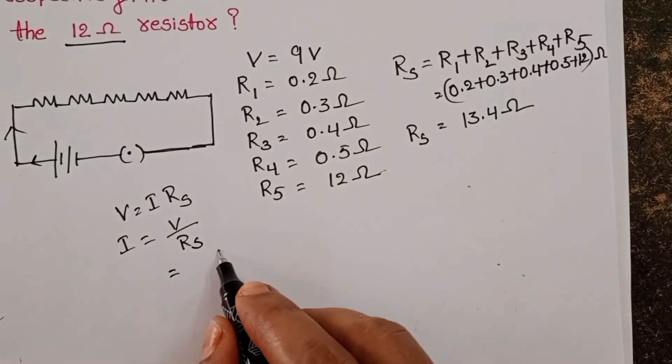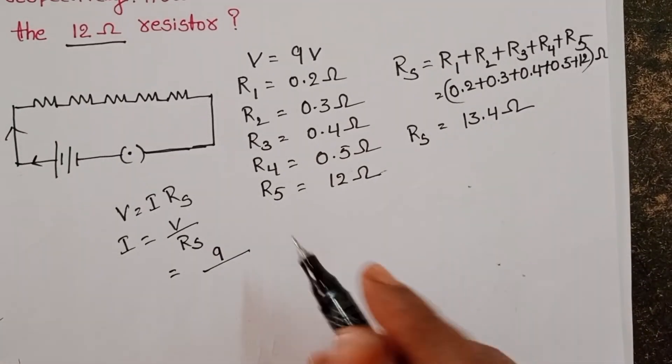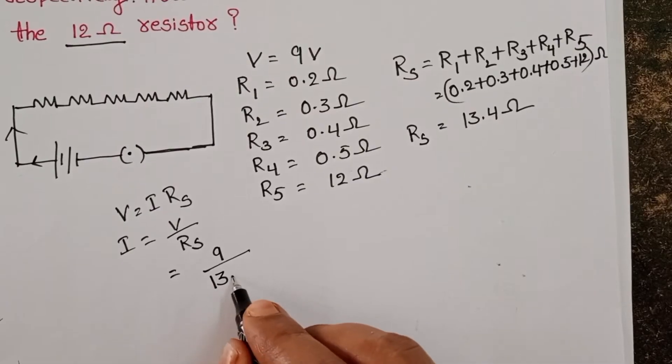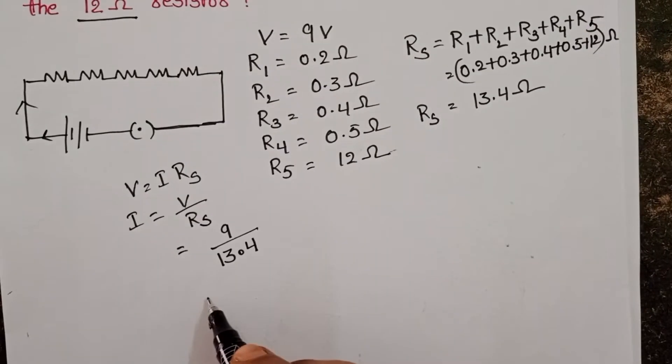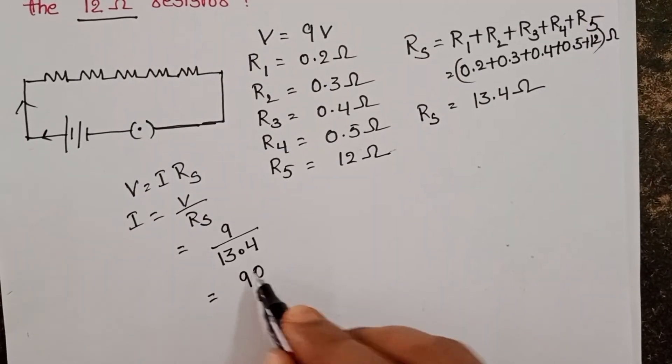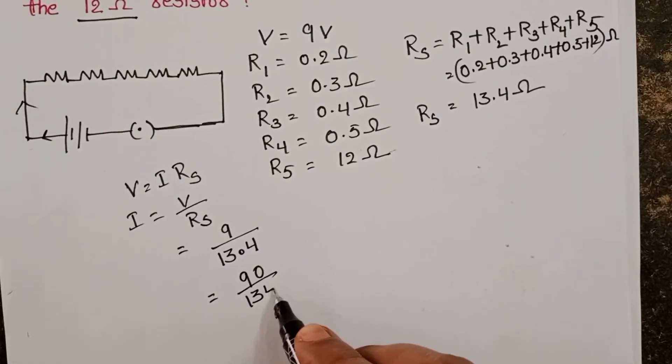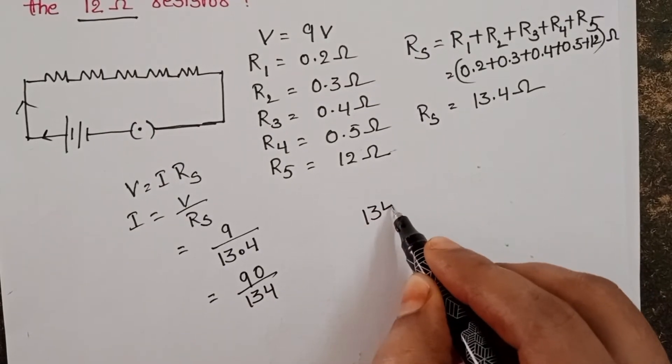The EMF of the battery is 9 volts and the resistance is 13.4 ohms. Now simplify this: 90 divided by 134.